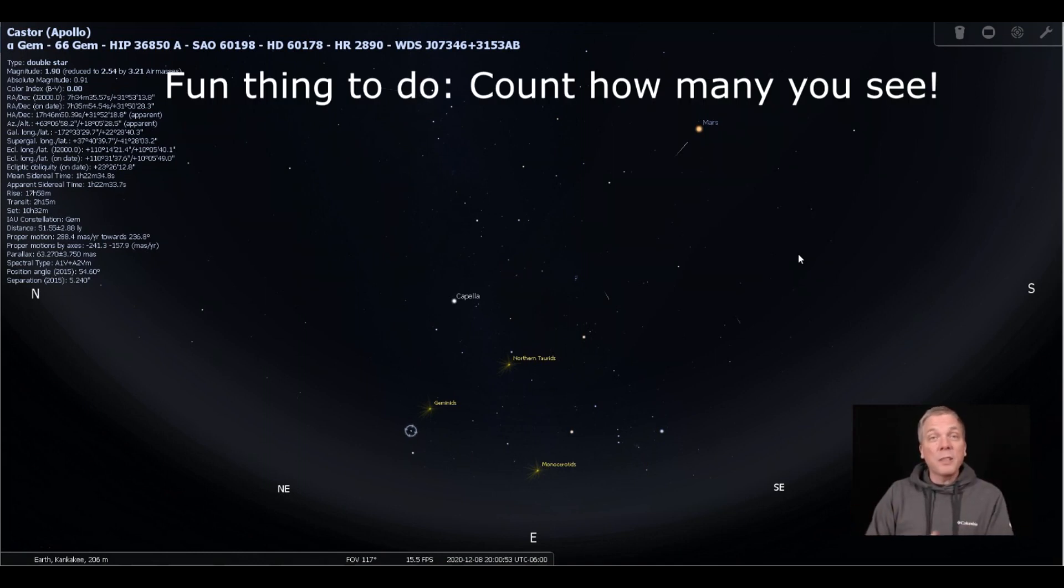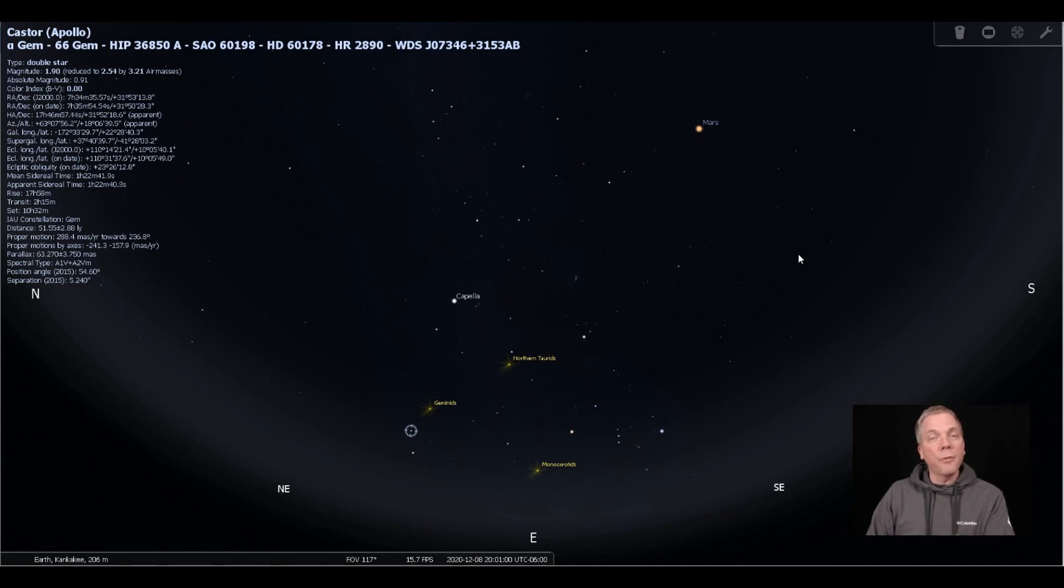And the Geminids are quick - they're faster than the Perseids are. They're also maybe not quite as bright, just because of the type of debris that 3200 Phaethon leaves. But this is an easy naked eye event you can enjoy with the entire family.